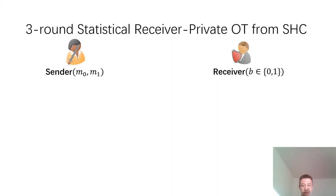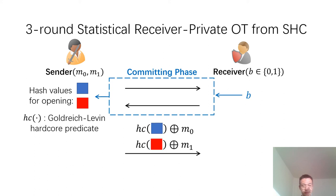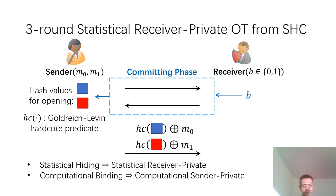We show how to construct a three-round statistical receiver-private oblivious transfer from this commitment scheme. The idea is to have the receiver act as the committer and the sender act as the receiver. So the receiver commits its input bit β using this commitment scheme. After the committing phase, the sender gets two hash values for the opening. Next, the sender applies the Goldreich-Levin hard-core predicate to both hash values and XORs with its messages M₀ and M₁, sending these two values to the receiver in the third round. Since the commitment scheme is statistically hiding, the receiver's bit β is statistically hidden, giving statistical receiver privacy. Since the commitment scheme is computationally binding, the receiver cannot obtain both hash values simultaneously, giving computational sender privacy.